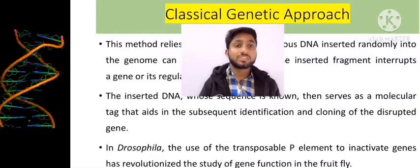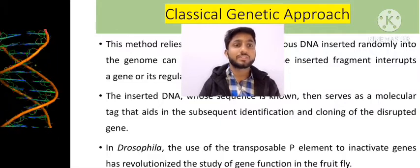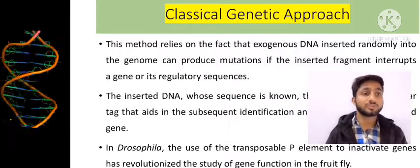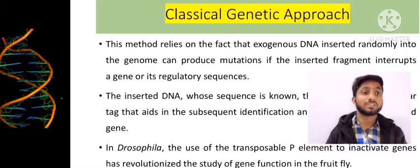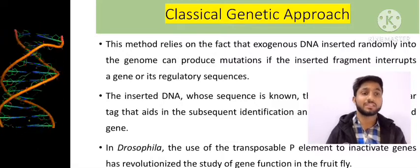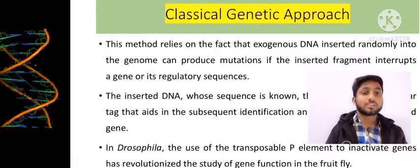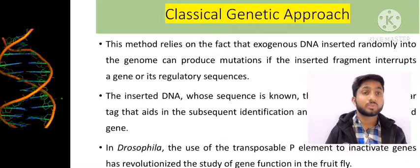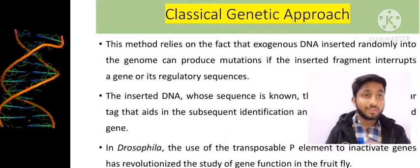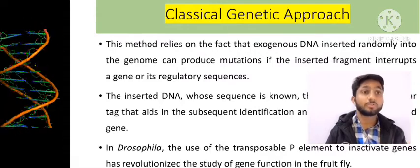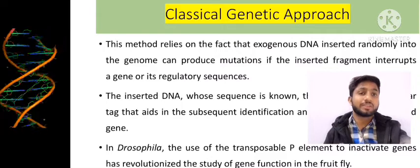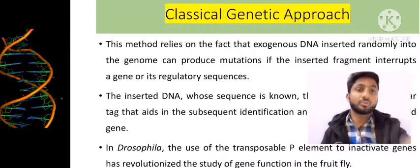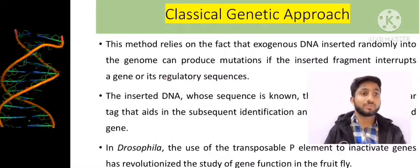We will discuss loss of functional mutations and gain of functional mutations in the context of classical genetic approach, and when these were studied in classical genetics. The classical genetic method relies on the fact that exogenous DNA inserted randomly in the genome can produce mutations if the inserted fragment interrupts a gene and its regulatory sequences.